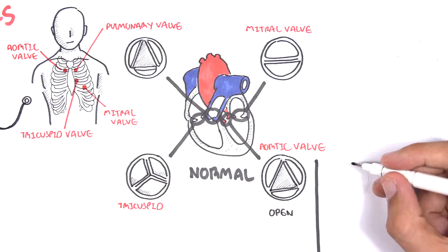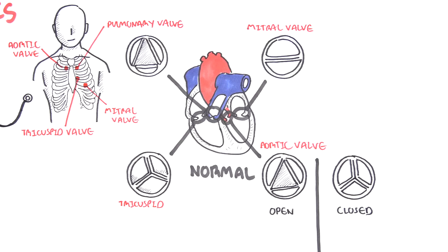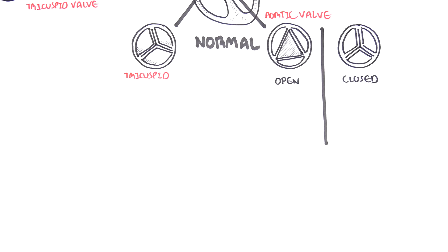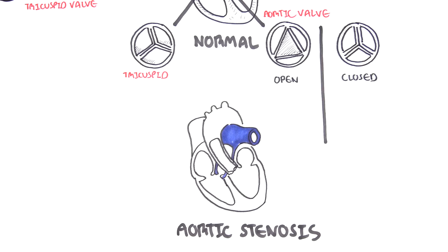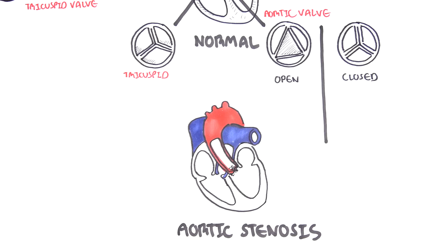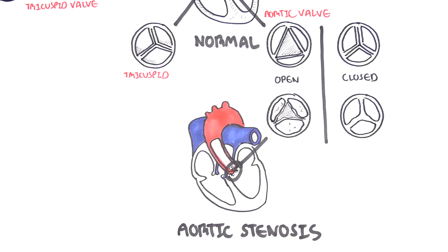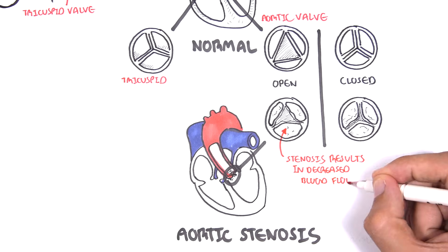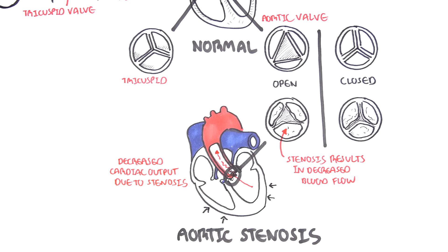This is what a normal aortic valve looks like when it's opened and when it's closed. The heart with a stenotic valve cannot pump blood efficiently. Here is an open and closed aortic valve with stenosis. Even when the aortic valve is open, the stenosis results in a decreased blood flow. With decreased blood flow, there is decreased cardiac output.